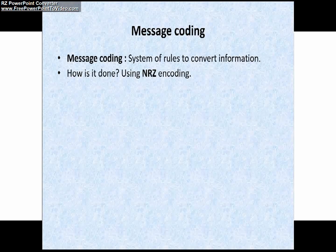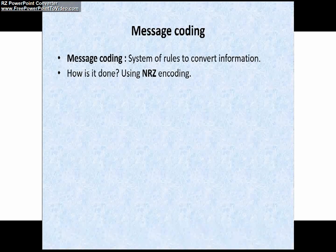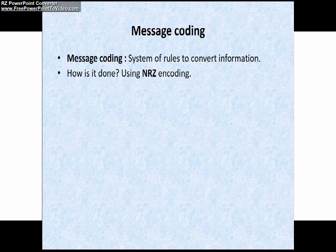What is NRZ encoding? Encoding means the process of converting one form of data into another form — for example, analog to digital conversion. In a CAN network, this means conversion of various voltage levels into 1s and 0s, that is, dominant and recessive bits. NRZ is abbreviated as non-return to zero.